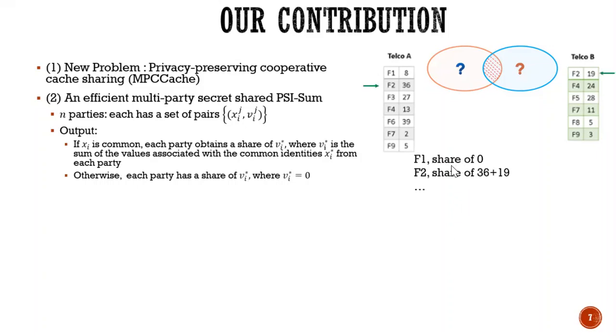So for example here, you see F1 is not a common value. So the party has the share of 0. And otherwise, like F2, this is a common file. So they have the share of 55.